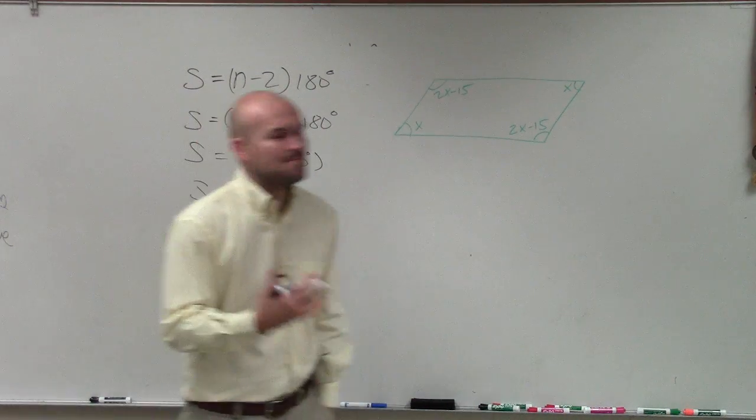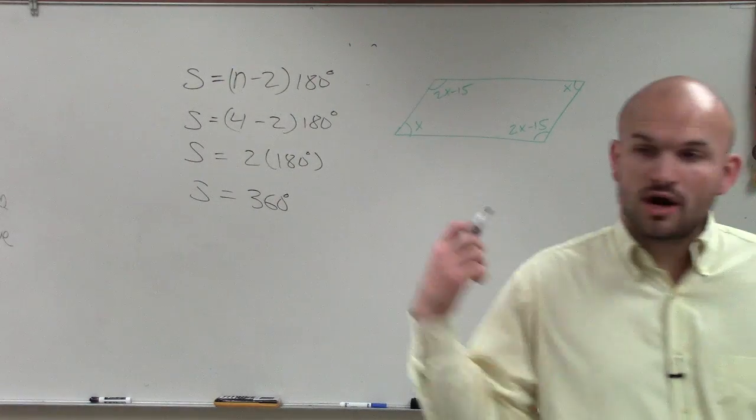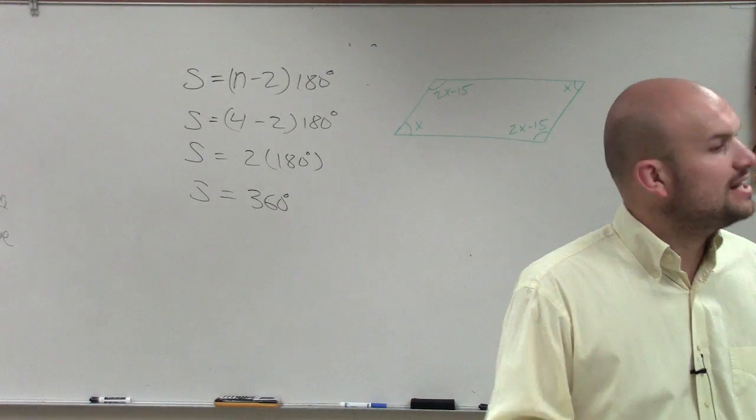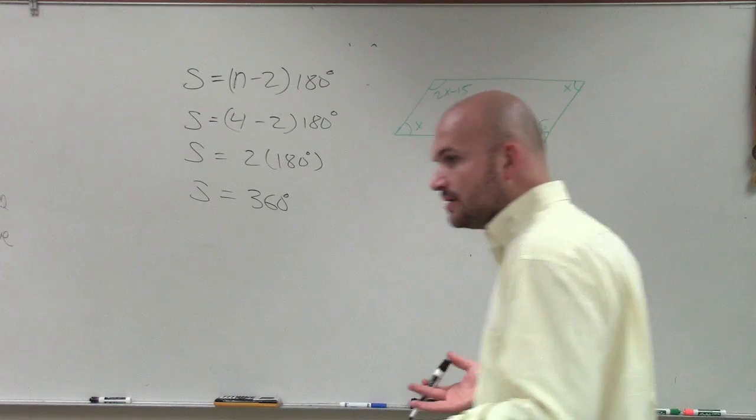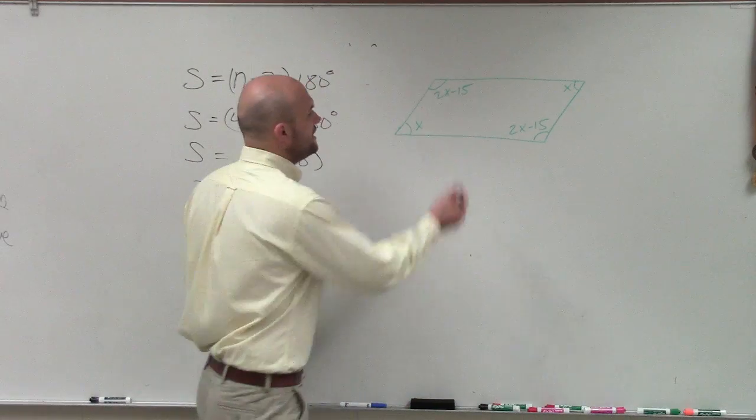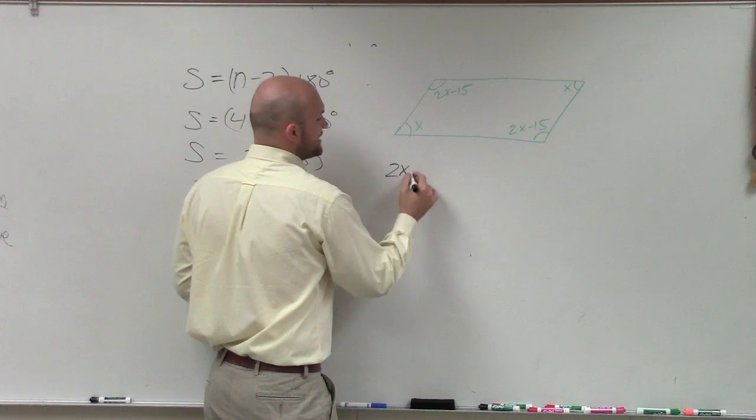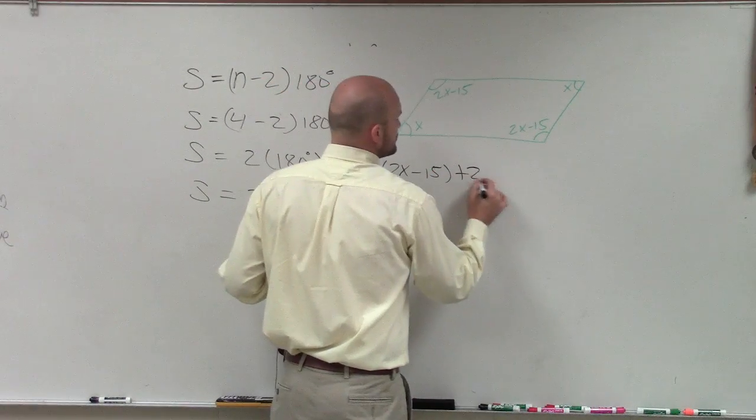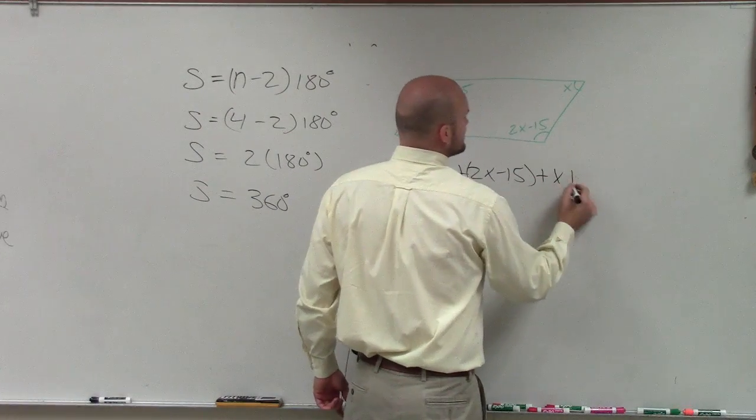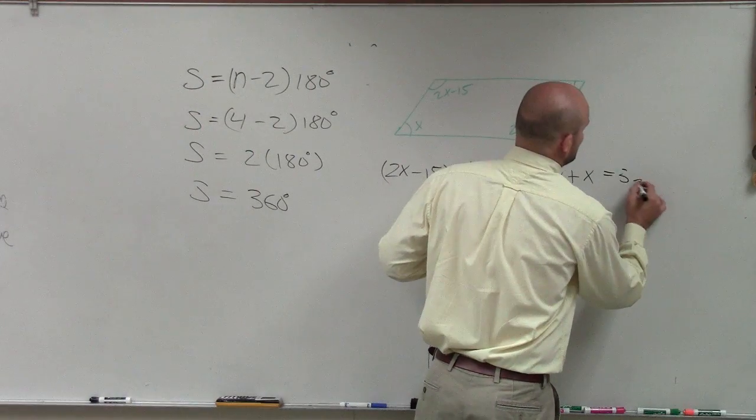So what does that mean? That means the sum of all the interior angles for a quadrilateral adds up to 360. Well, we need to remind ourselves, what does sum represent? The sum is the addition of multiple terms. So we need to add up all the angles. That means if I add 2x minus 15 plus 2x minus 15 plus x plus x, the addition of all of those angles is going to equal 360.